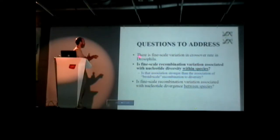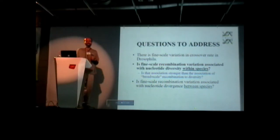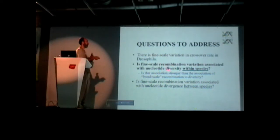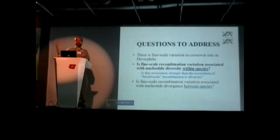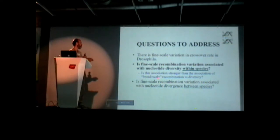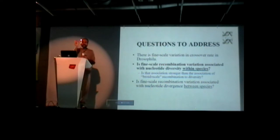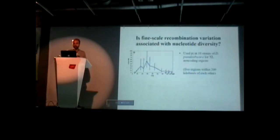So to answer the first question: yes, there is fine-scale variation in recombination rate in Drosophila. Second question: does it matter? Is this recombination variation associated with nucleotide diversity within species? Do we see an effect on DNA sequence variation? And secondarily, is that association stronger using fine-scale recombination estimates than using broad-scale recombination estimates?